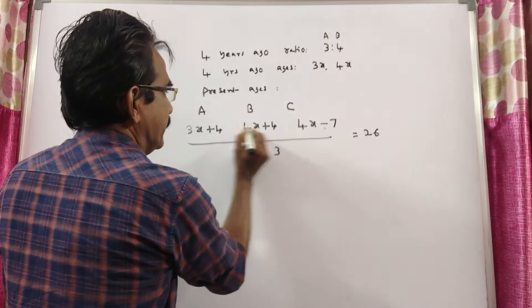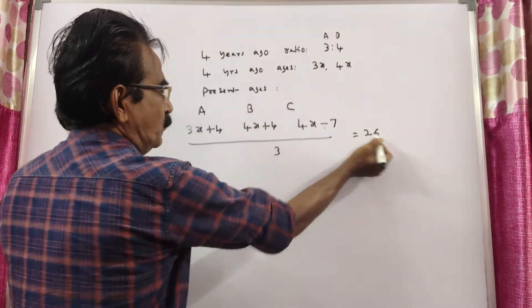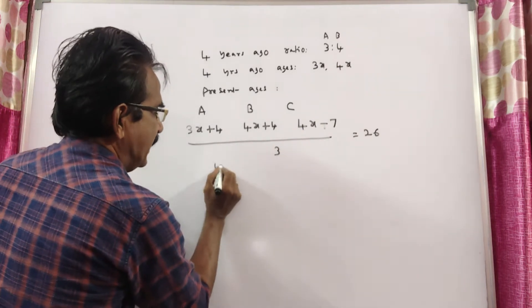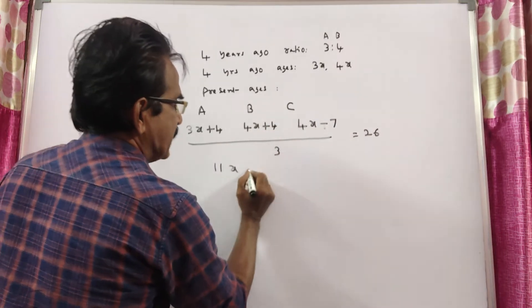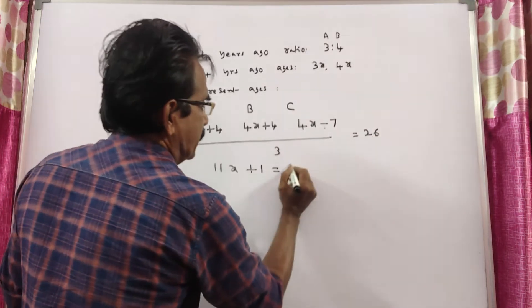This plus this plus this by 3 is equal to 26. So 3x plus 4x is 7x plus 4x is 11x. 4 plus 4 is 8, 8 minus 7 is 1. 11x plus 1 is equal to 3 times 26 is 78.